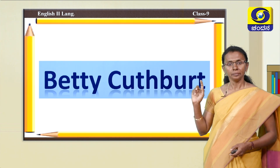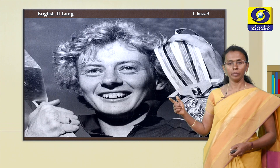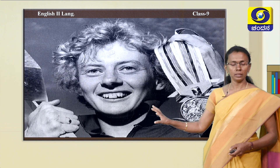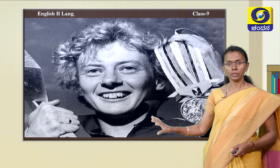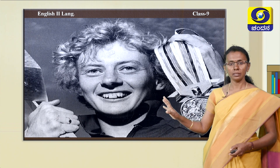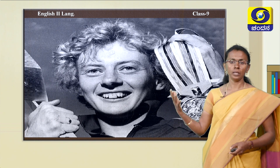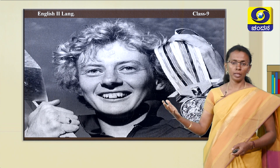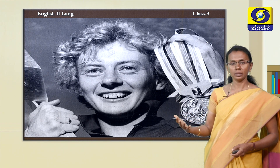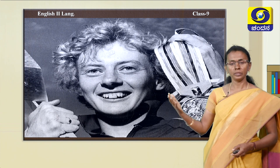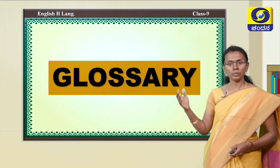Betty Cuthbert is the Australian athlete with whom we have to understand that she is not just a woman — she is the gold medalist who won great fame in the world. This poet also remembers the girl called golden in the form of this great woman. Now let us come to our poem's glossary.